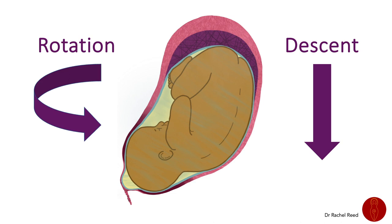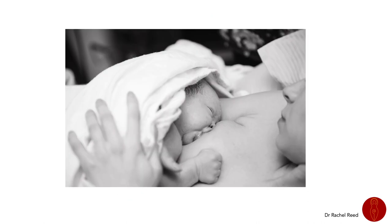Another function of the amniotic fluid during labor is to assist with rotation and descent of the baby. The fluid gives the baby the ability to move and rotate, because it's much easier to move when the uterine muscle is held from direct compression. When the amniotic sac ruptures — which usually occurs once the cervix has been almost pulled up over the baby's head, often during the transition phase — it further lubricates the vagina, assisting the descent of the baby.